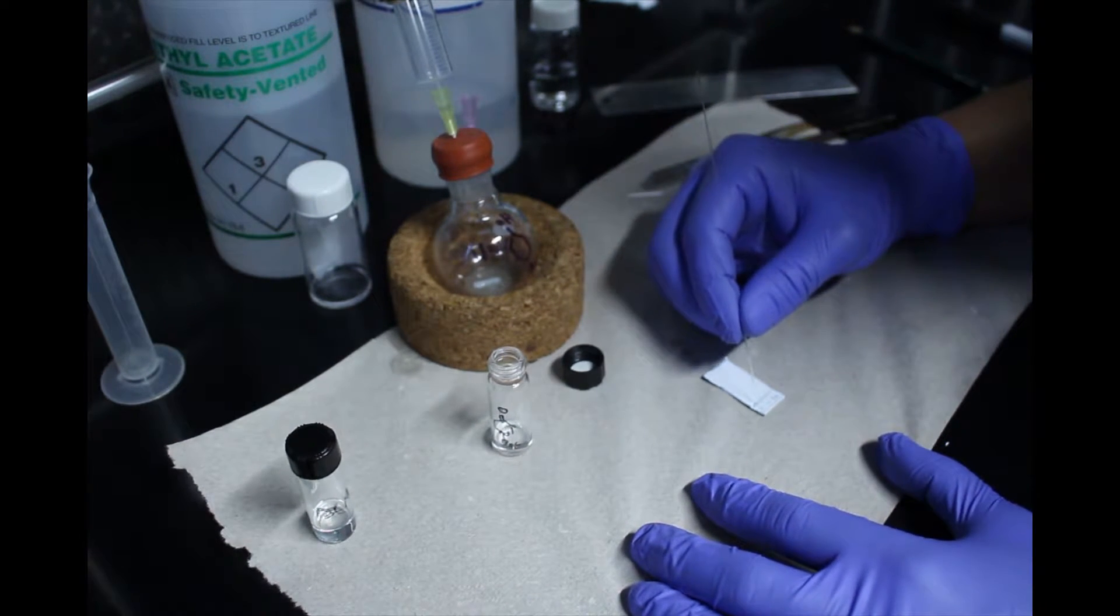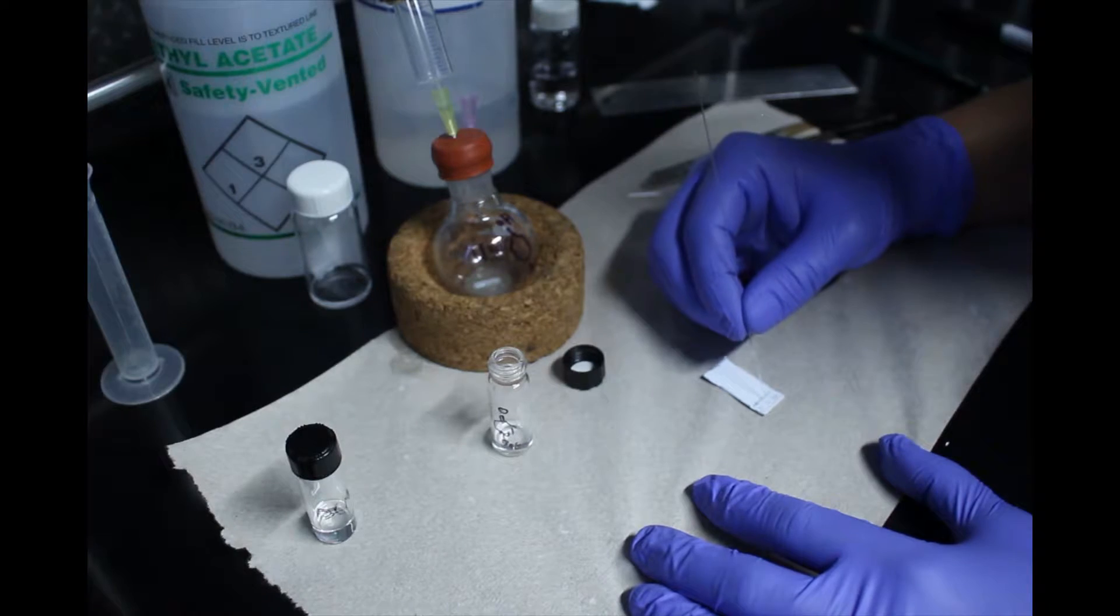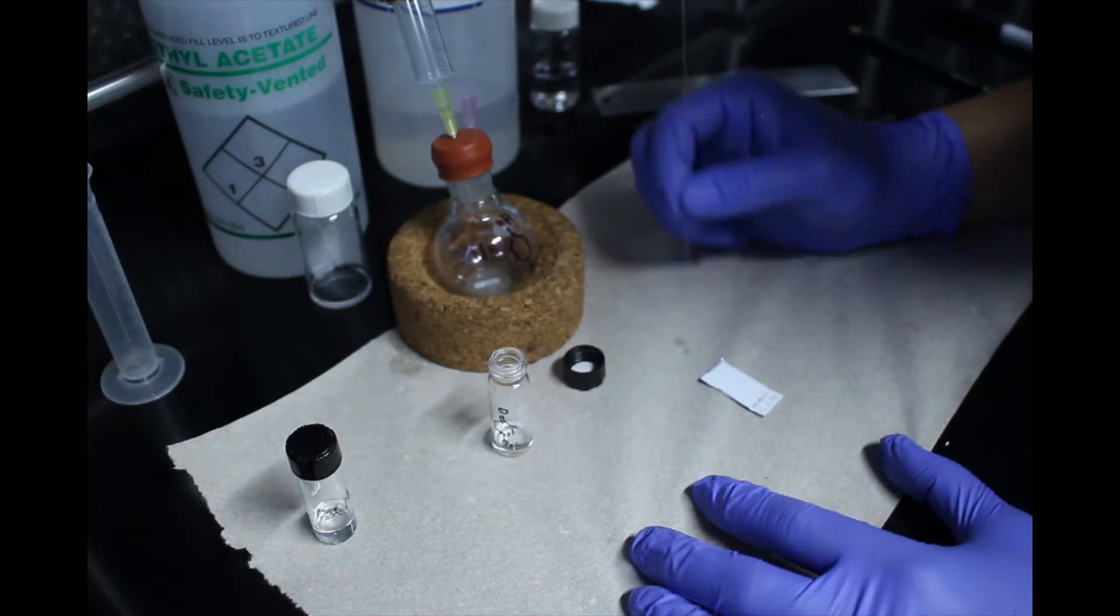Spot your starting material on the first two lanes using a spotter. Rinse the capillary tube in a small vial filled with dichloromethane and remove the rinse by spotting onto a paper towel.